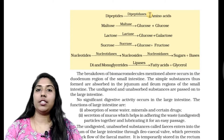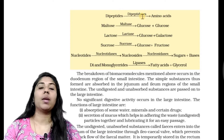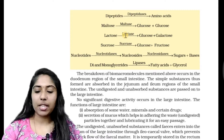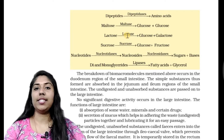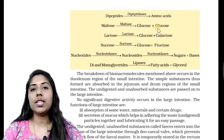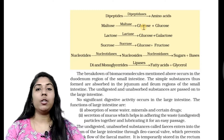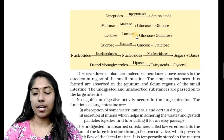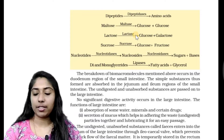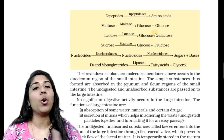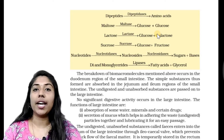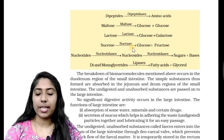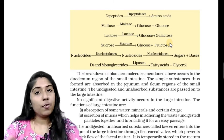Next we start to digest carbohydrates — sucrose, maltose, lactose. First, maltose is acted on by maltase enzyme, producing two glucose molecules — very simple form. Next is lactose: lactase enzyme produces one glucose molecule and one galactose molecule. Then sucrose is acted on by sucrase, producing one glucose molecule and one fructose molecule.